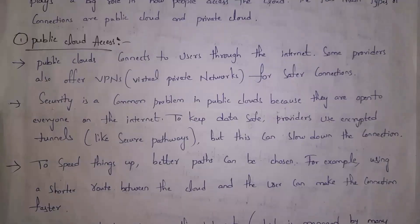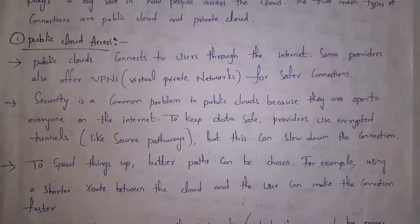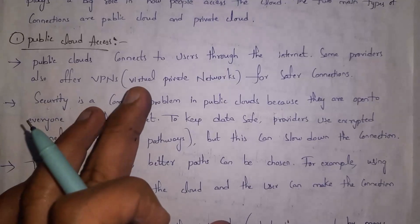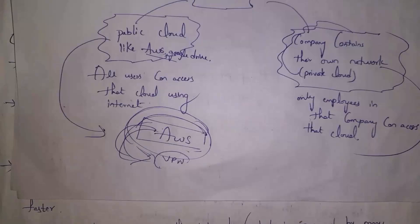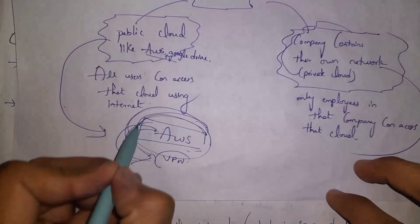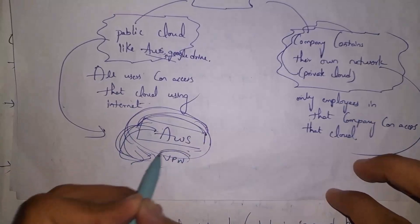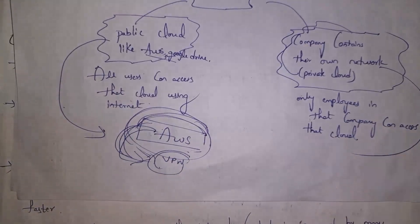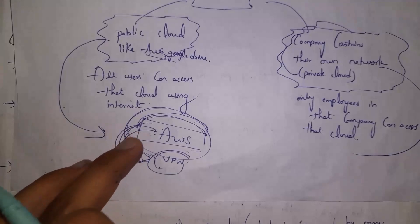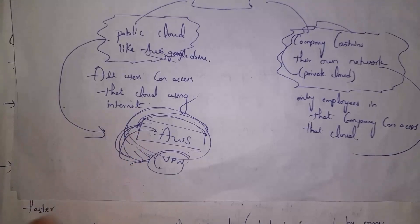First, I will explain what is public cloud access. All users can connect to a public cloud by using the internet. Some public cloud providers also offer virtual private networks for safer connections. For example, AWS is a public cloud, and inside it we can create a virtual private network for a safer connection.